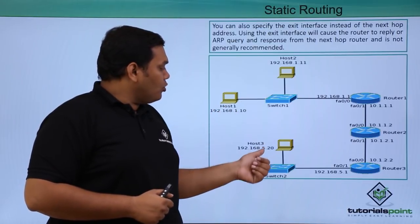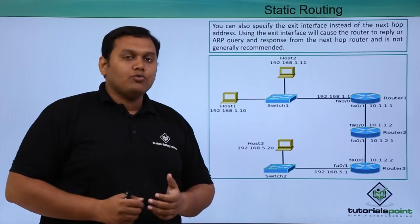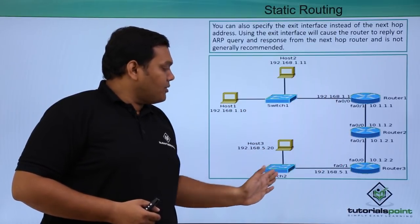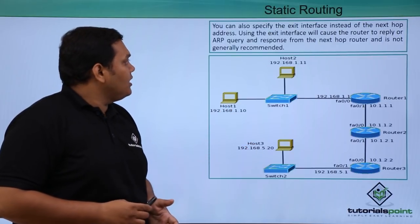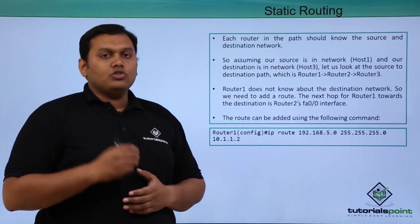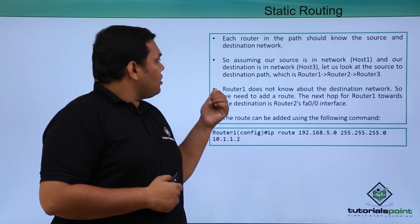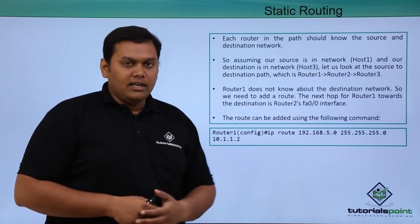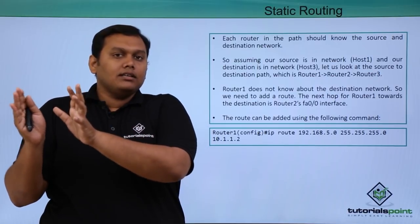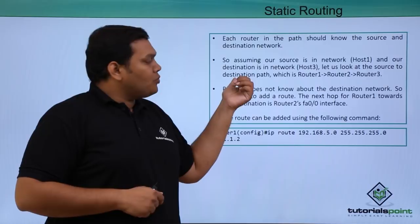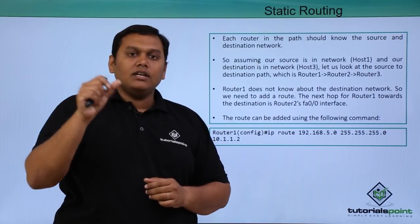In this example, we have Host 1, Host 2, and Host 3, with two switches and three routers connected to them. If a packet wants to move from Host 1 to Host 3, it must learn all the routing information and know the destination IP address. Each router in the path should know the source and destination — this is a common concept in routing. Assuming our source is Host 1 and our destination is Host 3, the path goes from Host 1 through a switch, then Router 1, Router 2, and Router 3.